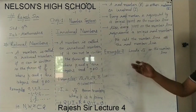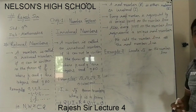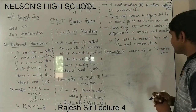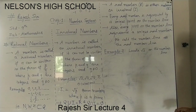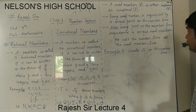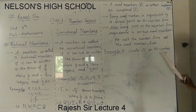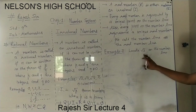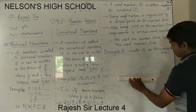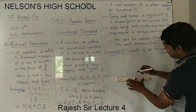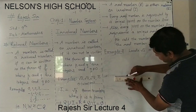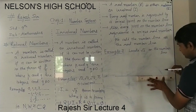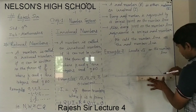After understanding rational, irrational numbers, and the real number line, Example 3 is: locate root 2 on the number line. This type of question will be asked in exams for 2 or 3 marks. So how to deal with this — how to locate root 2 on the number line. First, we will draw the number line using scale and pencil.